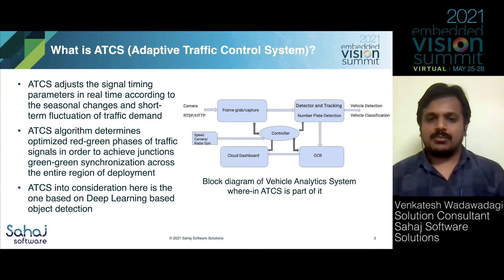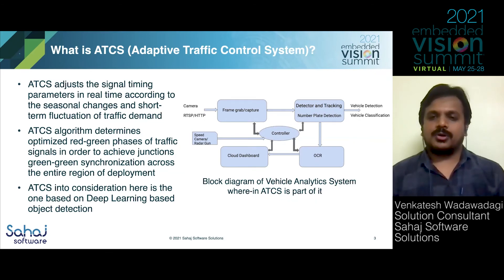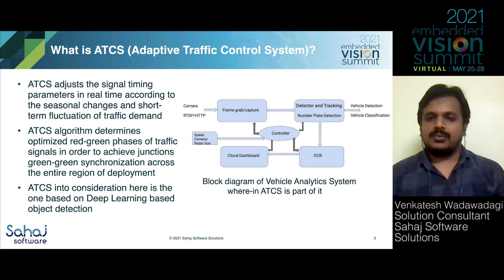We have a speed camera module to detect vehicle speed, which is needed for detecting violations related to vehicle speed. However, if we are talking about ATCS specifically, we don't need OCR and the speed camera. Without those components, this is essentially the block diagram of ATCS.